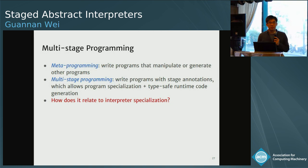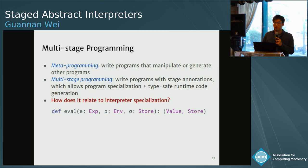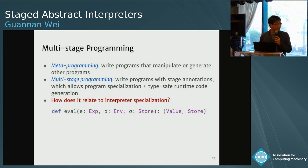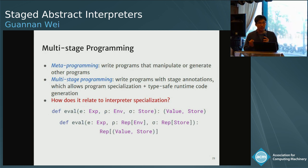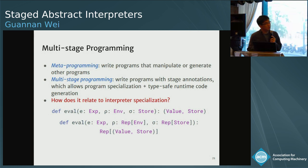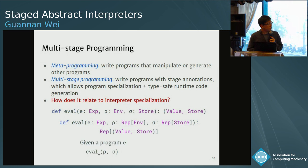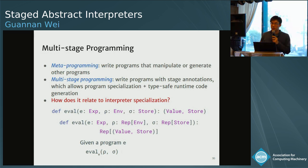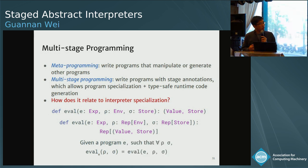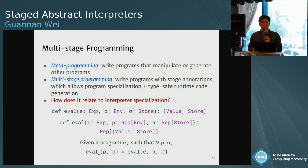How does this relate to interpreter specialization? Consider an interpreter that takes an AST E, an environment, and a store, and returns a value and store for effects. Since we know the AST E at the current stage but the environment and store depend on dynamic execution, we annotate the environment and sigma store types with the Rep annotation, and likewise the return type. Given a program E, we can obtain a specialized interpreter eval_E that takes only two arguments — the environment and the store — and for any environment and store produces the same result as applying the interpreter directly. This is known as the first Futamura projection and serves as a certification of interpreter specialization.